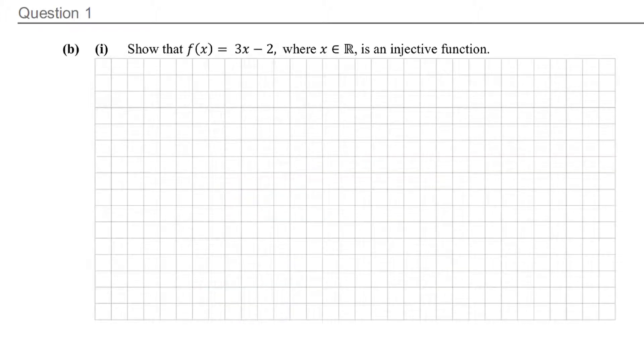It said that f(x) = 3x - 2 where x is an element of the real numbers is an injective function and you're asked to show that it is. There's lots of different ways to do it. Option 1 would be graphing. If you graph this, you can use what we call the horizontal line test. So the easiest points to get: f(0) = 3(0) - 2 = -2, so the point is (0, -2).